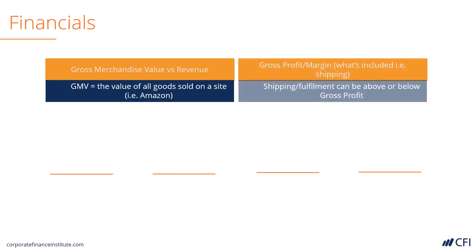Gross profit or gross margin is like any other business. However, in e-commerce there is some difference around shipping or fulfillment. Some companies include it in their cost of goods sold, while others do not. It's not really too important one way or the other — the only thing that matters is that you understand whether or not it's included.